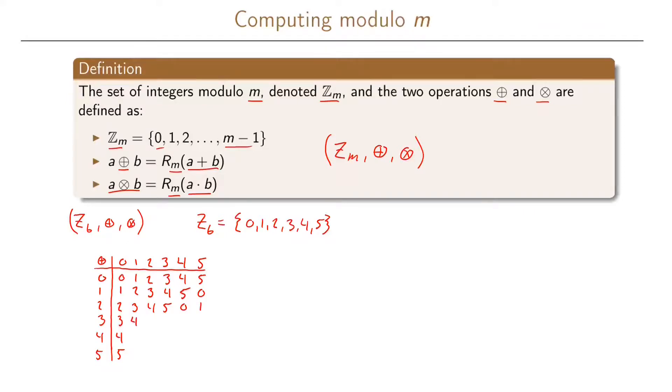So similarly we can fill out the rest of the table here. So 5 plus 1 is then 0, and then we continue to 5 plus 5 is 10, divided by 6 the remainder will be 4.